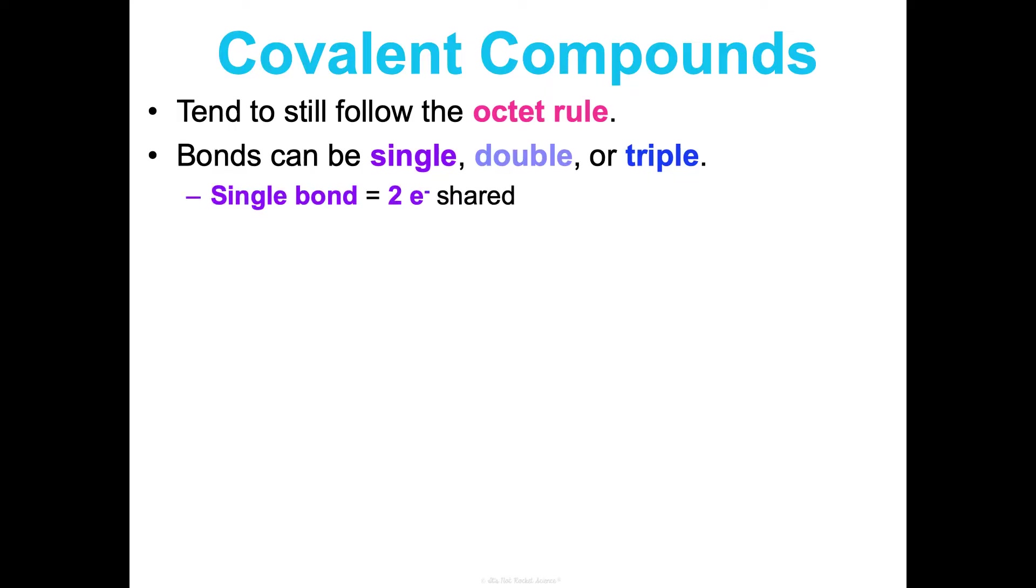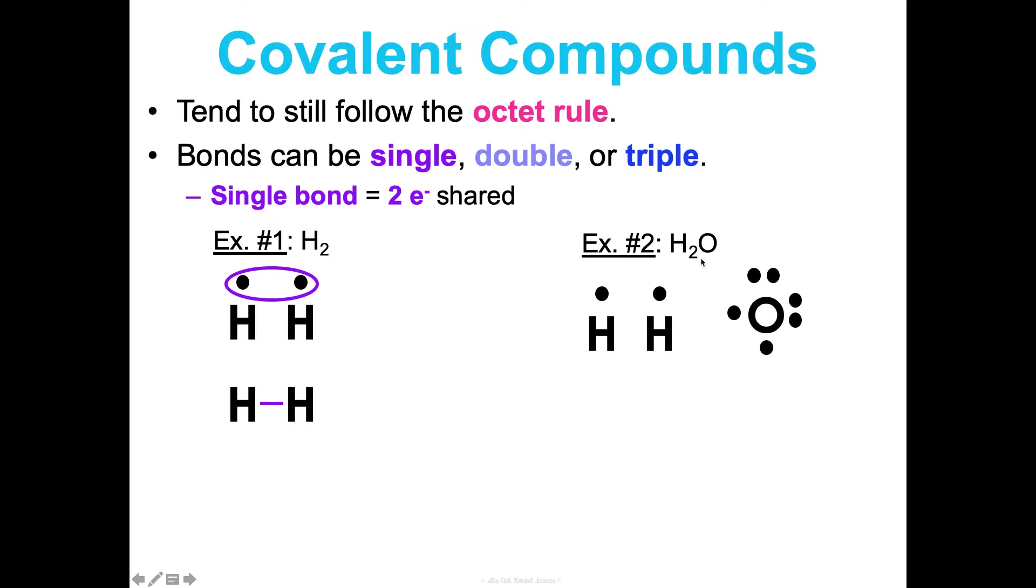In a single bond, they're going to share two electrons. An example would be hydrogen H2: two hydrogen atoms share, and that one dash represents two electrons shared. Another example is water: two hydrogen atoms, one oxygen per the chemical formula. Those will share and those will share. Notice that's one oxygen bonded to one hydrogen and one bond to another. These are single bonds sharing two electrons each. Oxygen here has two lone pairs of electrons and two bonding pairs of electrons.